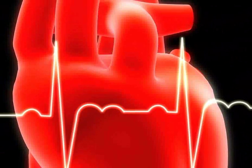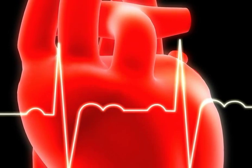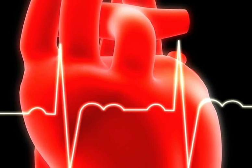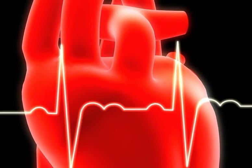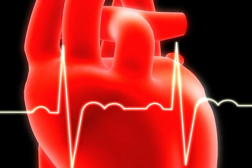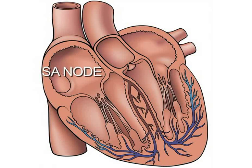Atrial fibrillation is a common disorder in which the heartbeat is irregular. A normal heartbeat occurs as follows. First, an electrical impulse is generated in the sinoatrial, or SA, node, a specialized region of pacemaker cells in the chamber of the heart called the atrium.